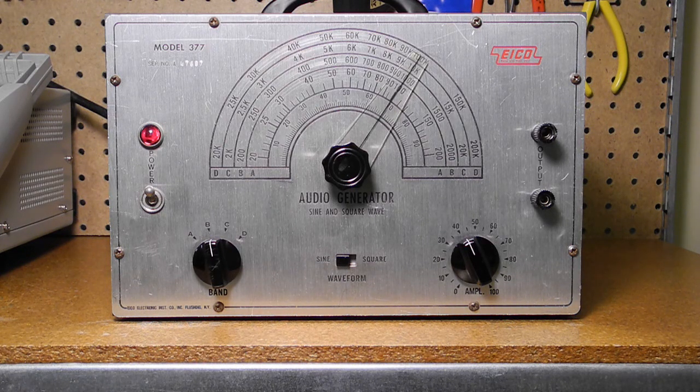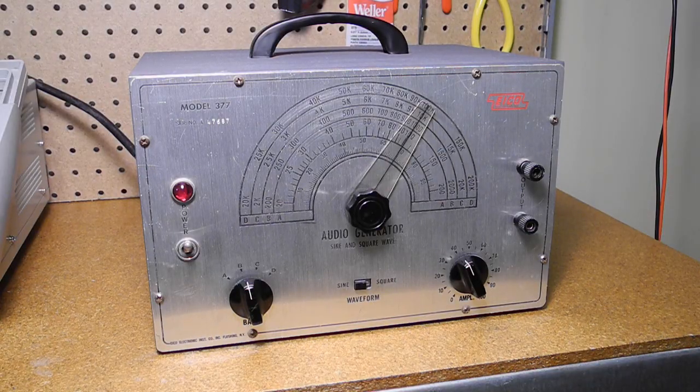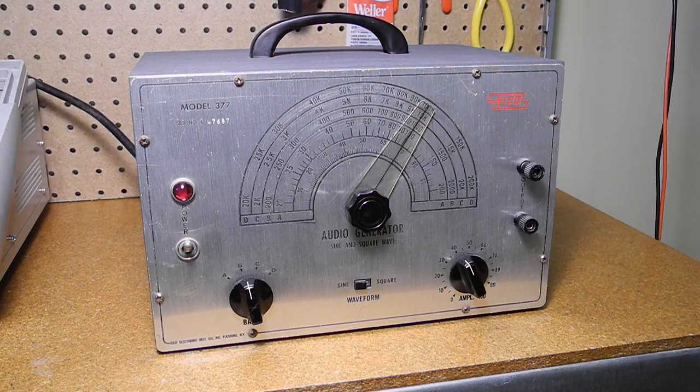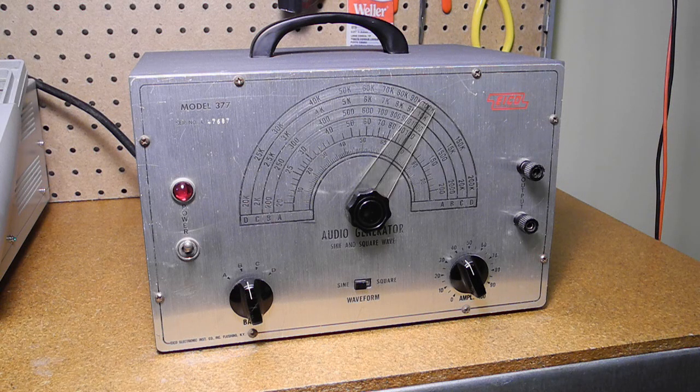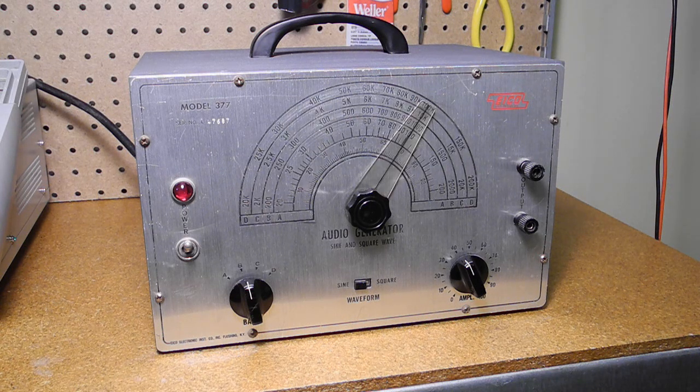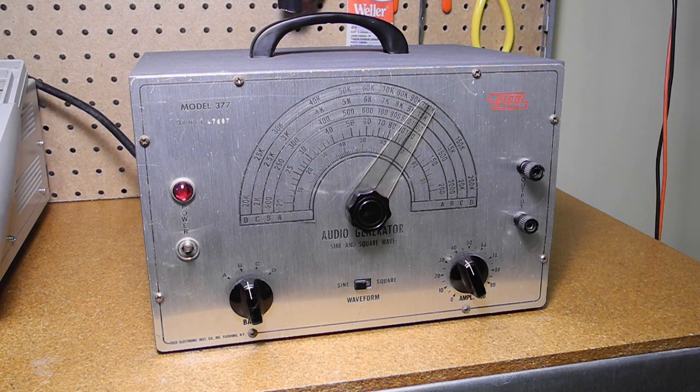Next to a multimeter, it's probably one of the most commonly used pieces of test equipment. The EICO 377 can produce sine and square waves over a frequency range from 20 to 200,000 Hz. Output is adjustable up to about 10 volts RMS into a 1,000 ohm load.